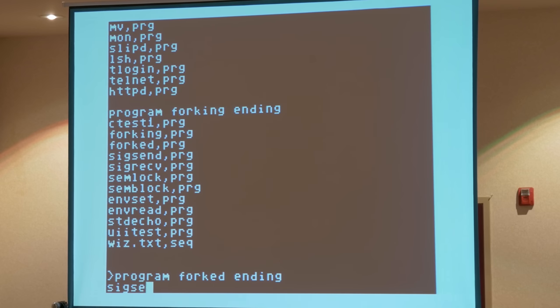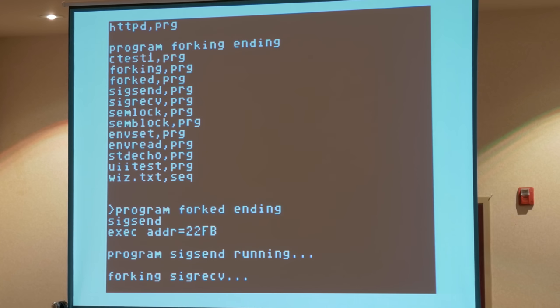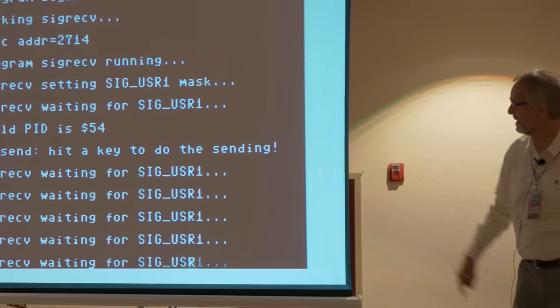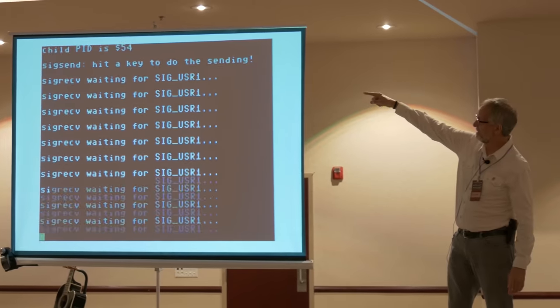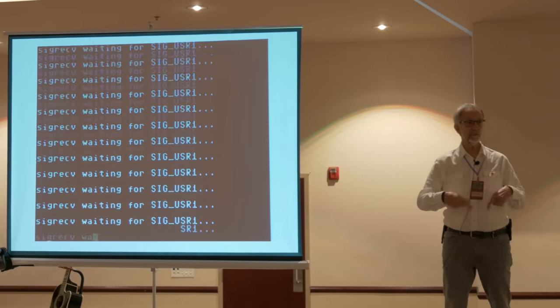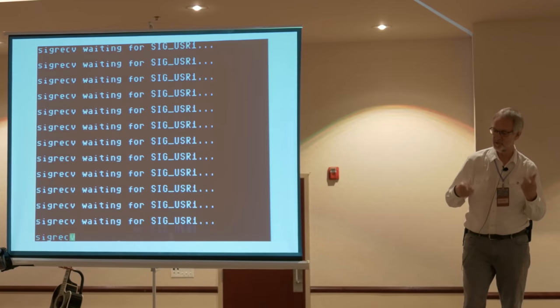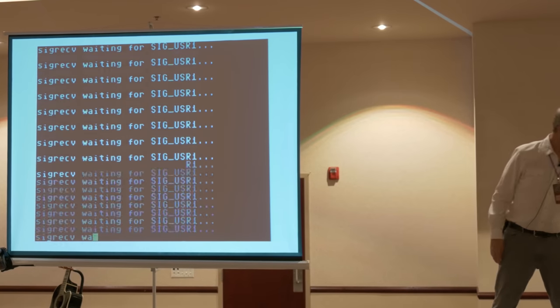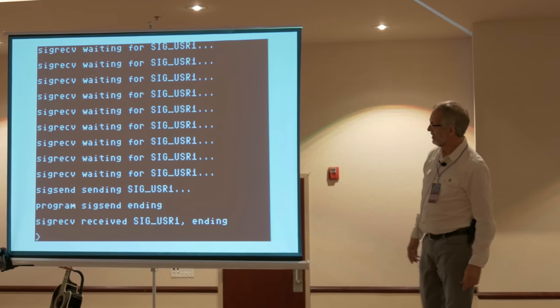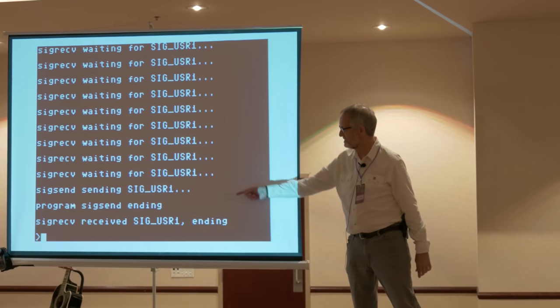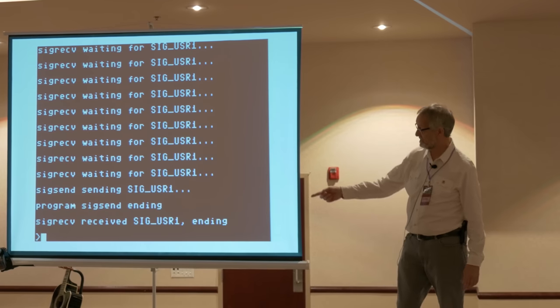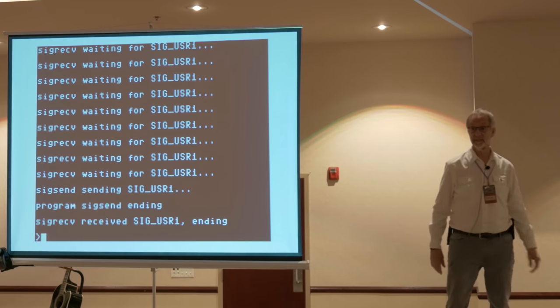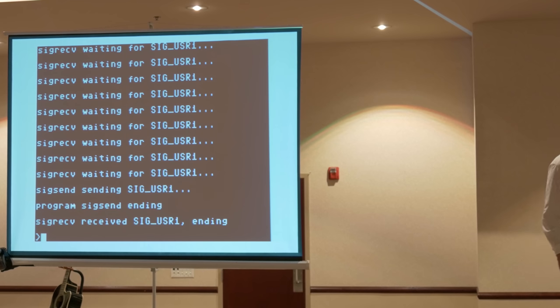Then I have one that demonstrates signal sending. So the first program is going to fork that second program. Yep, it's, okay. And the second program is immediately going to register a signal handler. Okay, setting sig user mask. And then the first one says hit a key to do the sending. Okay, meanwhile, that second program is running a little loop on a timer saying, okay, I'm waiting, I'm waiting, just so you know, he's still there. And when I hit a key, okay, sig send, that's the sig send and sig receive, sig send sent the signal and ended. And then sig receive, he got that signal and then he ended. Okay, so that's signal handling and that works really well.